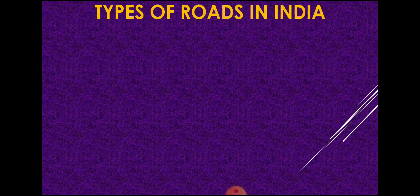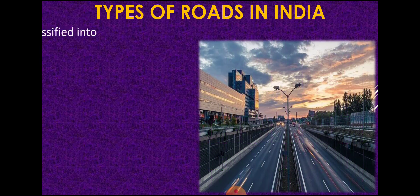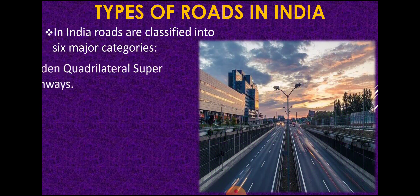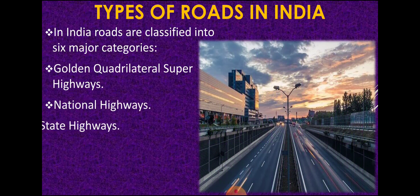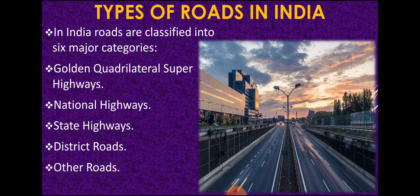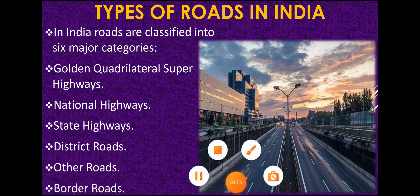Now we will talk about the six major types of roads in India, classified according to their size and usage. The six types are: first, Golden Quadrilateral Super Highway; second, National Highways; third, State Highways; fourth, District Roads; fifth, Other Roads; and sixth, Border Roads. Let us discuss each one by one.